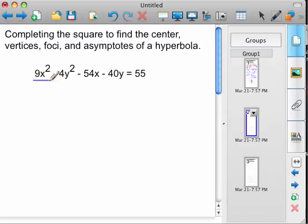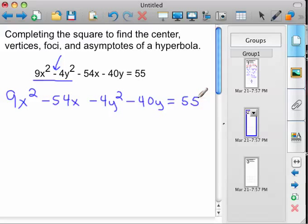Okay, first off, I know this is a hyperbola because 9x squared minus 4y squared, the negative right here keys us, the negative with the y squared or the negative with the x squared, either one. That tells us it's a hyperbola. So by grouping the terms, just like we did with the ellipse, 9x squared minus 54x minus 4y squared minus 40y equals 55.